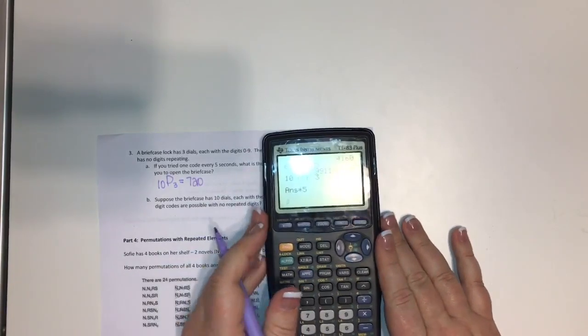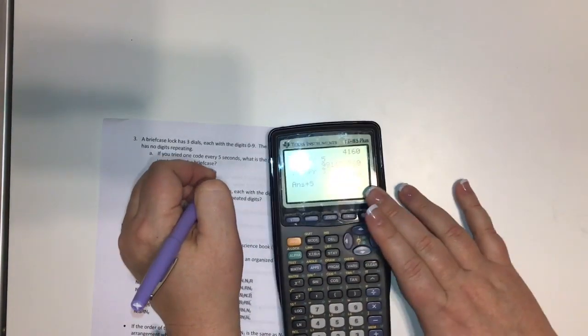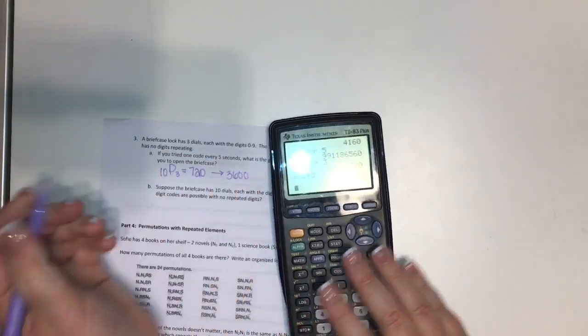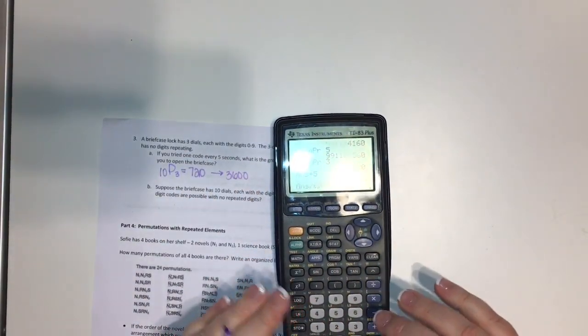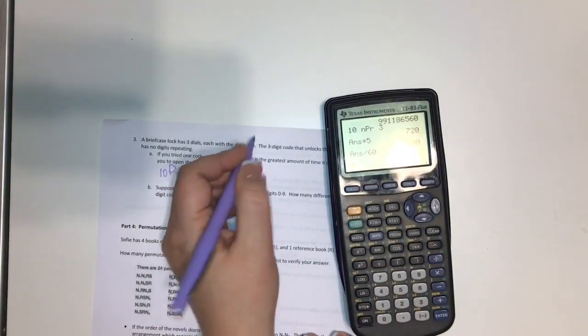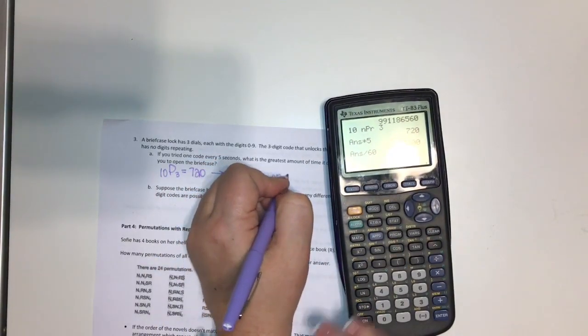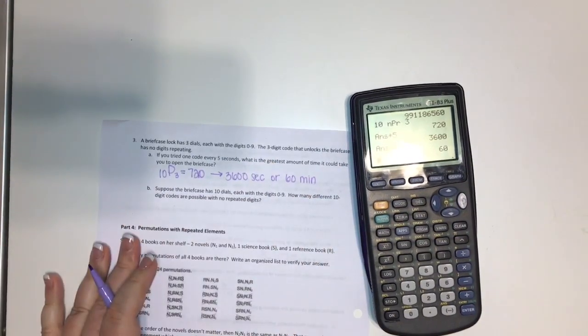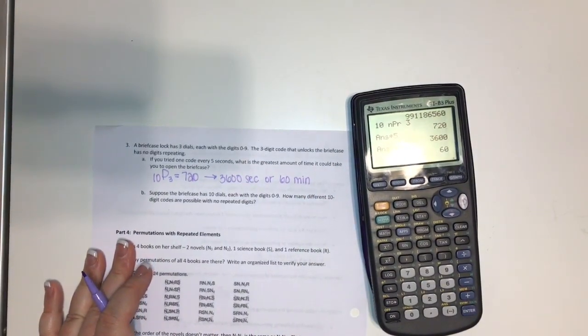So there's 720 different permutations and we're trying one every five seconds. So times five, that's, so it would be 3,600 seconds. If we divide that by 60, that gives us 60 minutes. So, or it would take us an hour to figure out what the permutation is.